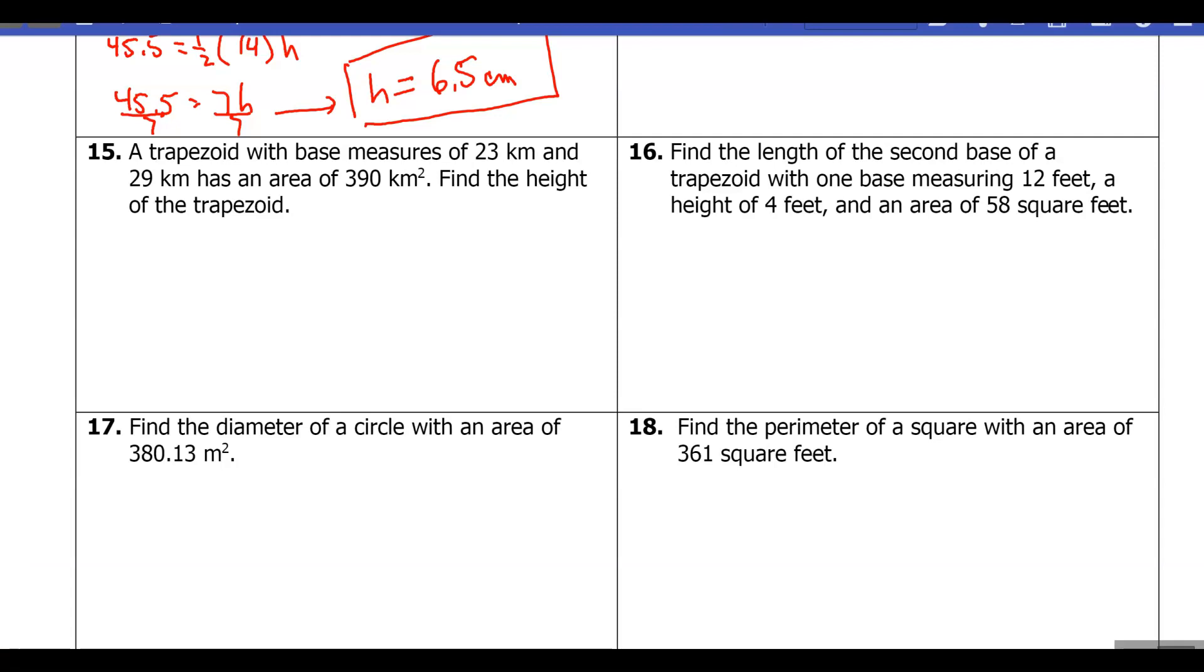23 kilometers and 29 kilometers has an area of 390 square kilometers. So here's our important information: we have bases that are 23 and 29, an area of 390 km², and we want to find the height.